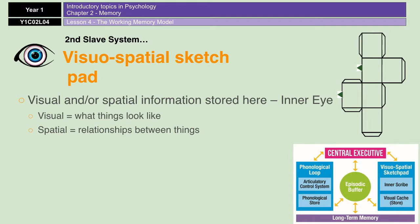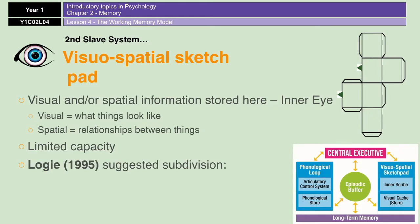In general, the visuospatial sketchpad is about what things look like visually, and the spatial relationships between things. It's also been suggested by Logie in 1995 that it is further subdivided into the visual cache, which is essentially a store, and the inner scribe, which looks at the relationships between things and your spatial awareness. Importantly, this sketchpad isn't just for visual information coming in — it's also for visual information you already have stored. If I asked you to imagine your house and walk through it in your mind, that would be your visuospatial sketchpad doing it.